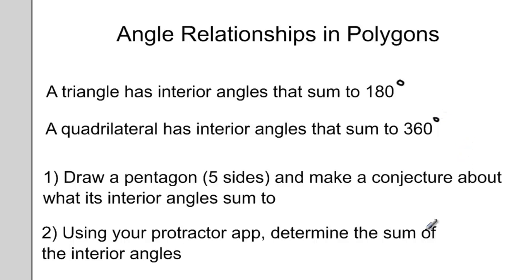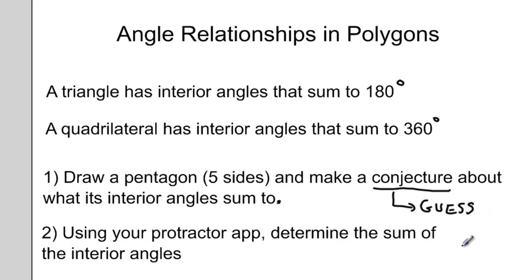What I'd like you to do is draw a pentagon — a five-sided shape — and make a conjecture about what its interior angles add up to. A conjecture is like your best guess, or a hypothesis. Once you've drawn your pentagon and made a guess, use your Protractor app that you've downloaded on your phone and see if you can figure out the sum of its interior angles.